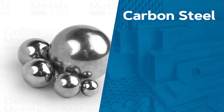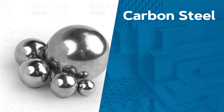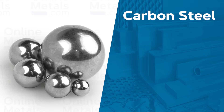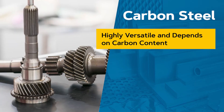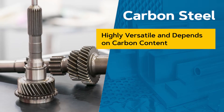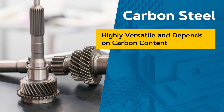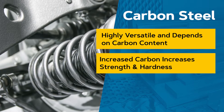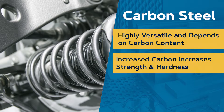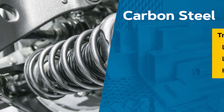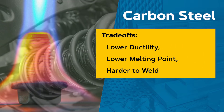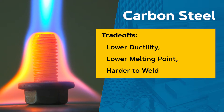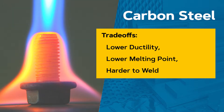Carbon steel. As the name indicates, the main alloy ingredient in this type of steel is carbon. Carbon steel is highly versatile and its uses and properties vary depending on its carbon content. As the carbon content rises, the steel becomes harder and stronger, however it becomes less ductile, more brittle, harder to weld, and the higher the carbon the lower the melting point of the steel.